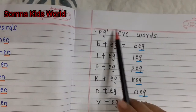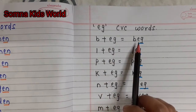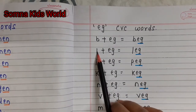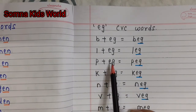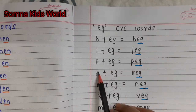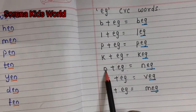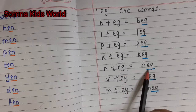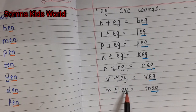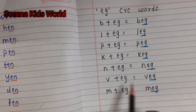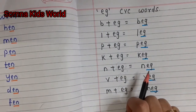Next is the 'eg' CVC words: l-eg — leg, p-ig — pig, w-ig — wig, and more words from the e-family. So this is about today's e-family words.